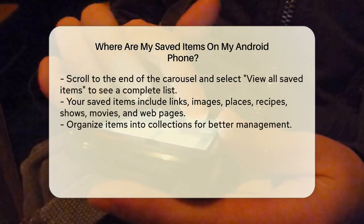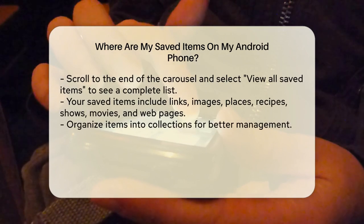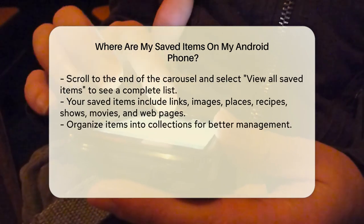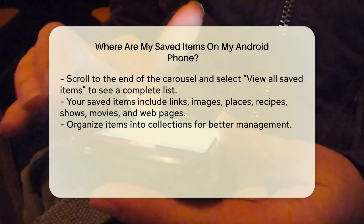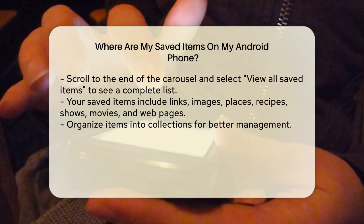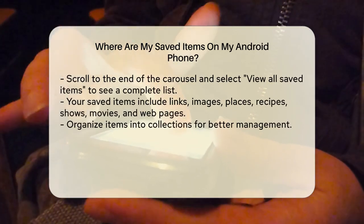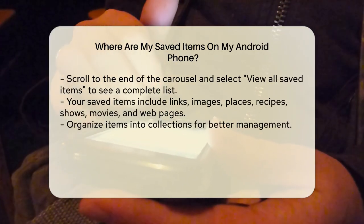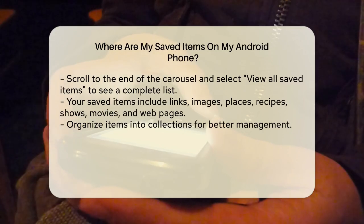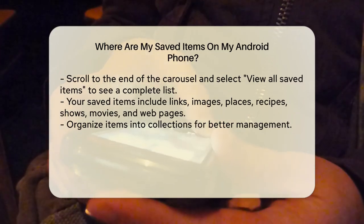Once you're in the Saved section, you can scroll to the end of the carousel and tap View all saved items. This will show you a list of everything you've saved, including links, images, places, recipes, shows, movies, and even web pages.